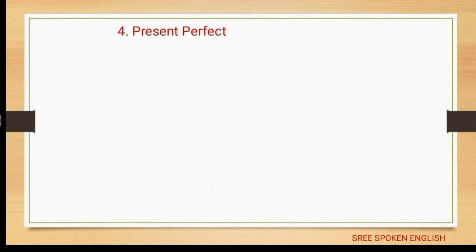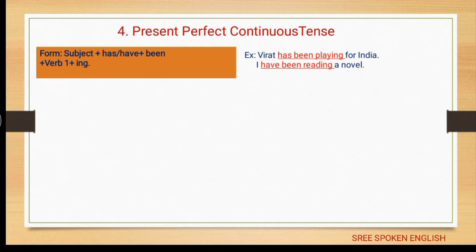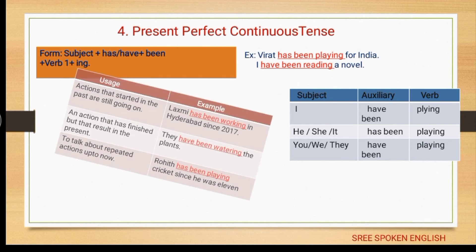The fourth subcategory: present perfect continuous tense. The form is: subject + has/have + been + verb base form in -ing form. Example: 'Virat has been playing for India' — Virat is singular so it takes 'has been' + verb in -ing form. Chart: 'I have been playing'; for he, she, it — 'has been playing'; for you, we, they — 'have been playing'.